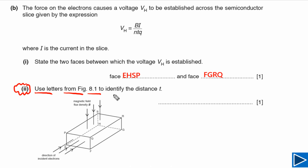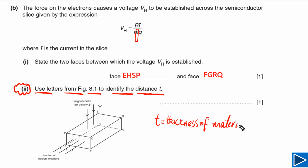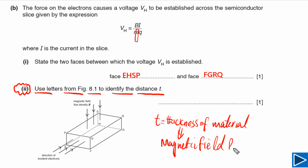For the next part, we need to use letters from figure 8.1 to identify the distance T in the Hall voltage formula. T is often referred to as the thickness of the semiconductor material — specifically, the thickness of the side through which the magnetic field is passing. In this case, the magnetic field passes through that side, so T is equal to QF, or equivalently, T is equal to PE.